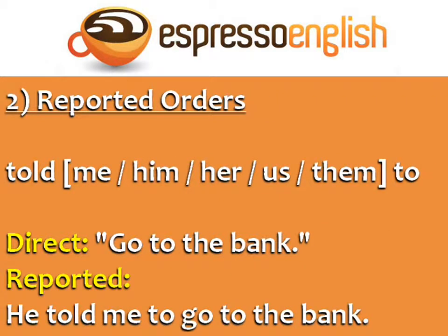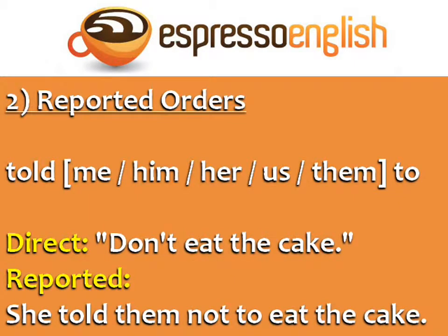For reported orders or commands, use the structure: told me/him/her/us/them + to. For example: Direct: 'Go to the bank.' Reported: 'He told me to go to the bank.' Direct: 'Don't eat the cake.' Reported: 'She told them not to eat the cake.' Again, in reported orders the main verb does not change its form from the direct to the reported statement.